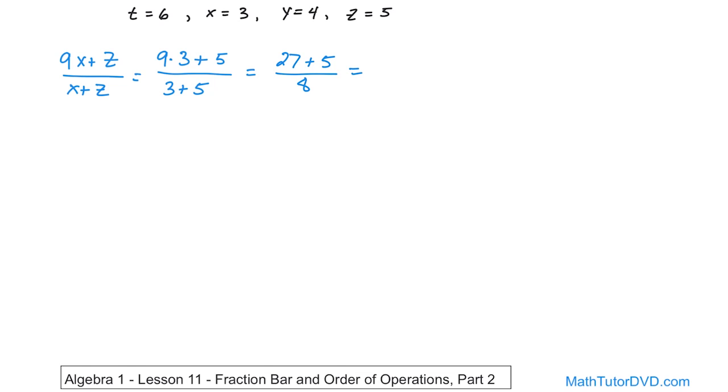Now on the top, all we have is that addition left. So 27 plus 5 is going to be 32 on the top, divided by 8. And when you do this division, 32 divided by 8 is simply 4. So that's the final answer.